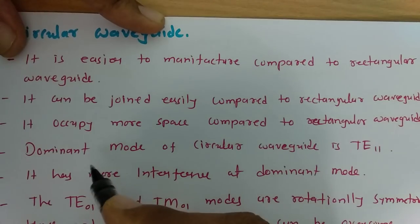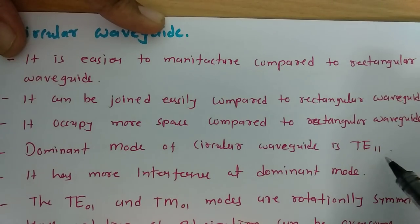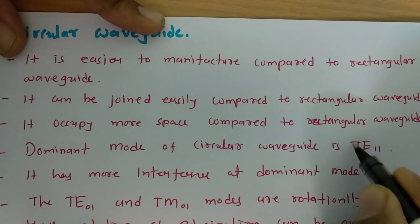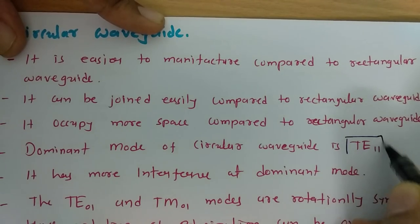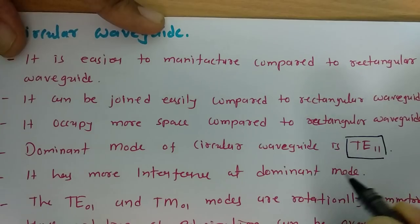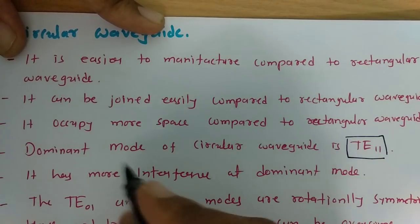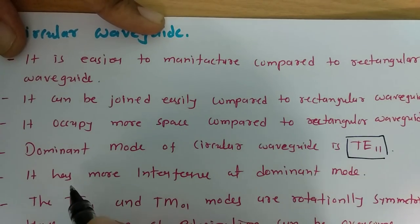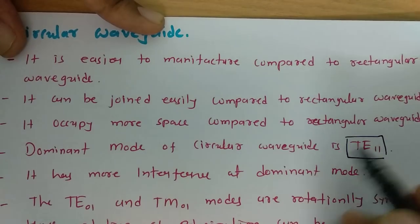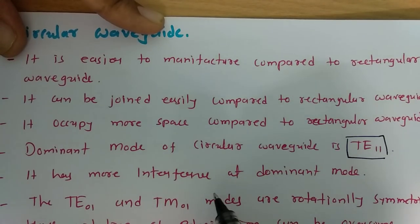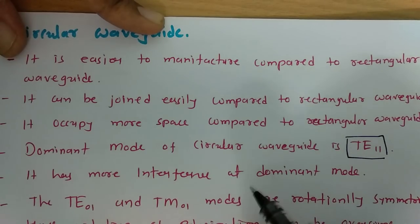The dominant mode of circular waveguide is TE11. This is a very important point — one should remember this. However, because so many frequencies interfere with the dominant mode, there is more interference at the dominant mode TE11.